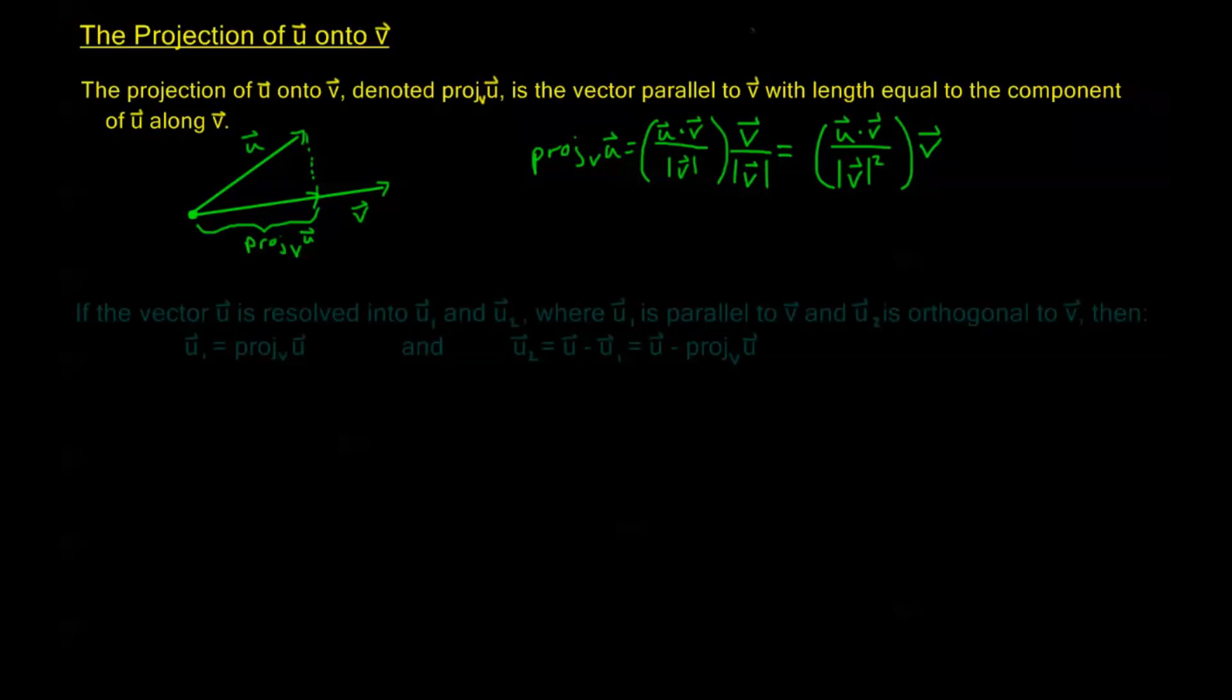Now before we do an example, something to note: if the vector u is resolved into u₁ and u₂, where resolved means broken down into a sum of two vectors, where u₁ is parallel to v and u₂ is orthogonal to v, then u₁ is the projection of u onto v and u₂ is the difference between u and u₁.